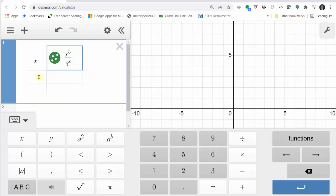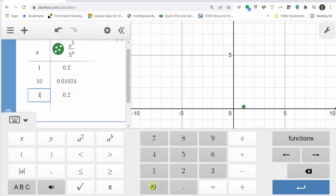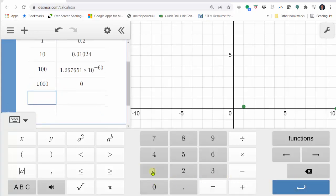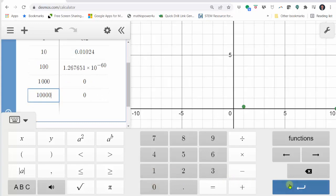And now we'll go to the first column and enter x values approaching positive infinity. Let's start with 1, enter, 10, enter, 100, enter, 1,000, enter, 10,000, enter.